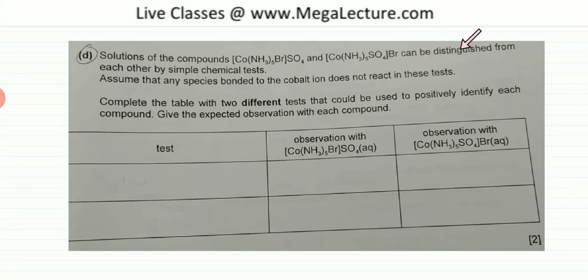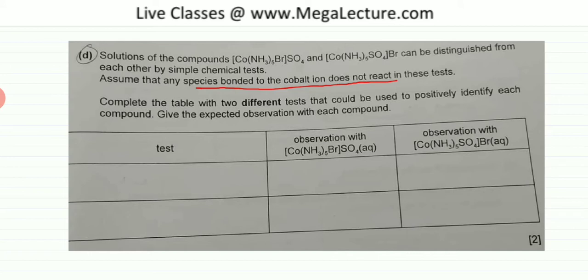These compounds can be distinguished from each other by a simple chemical test. The question states that any species bonded to the cobalt ion does not react with the test. So, the first thing I'm going to do is figure out the structure of these two compounds.